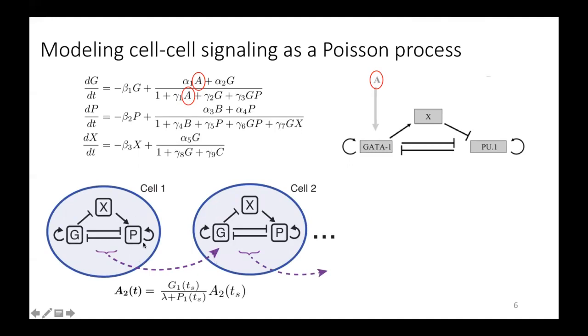And then vice versa, if PU1 is more highly expressed than GATA1, we'd expect the value of A2 in cell two to decrease.